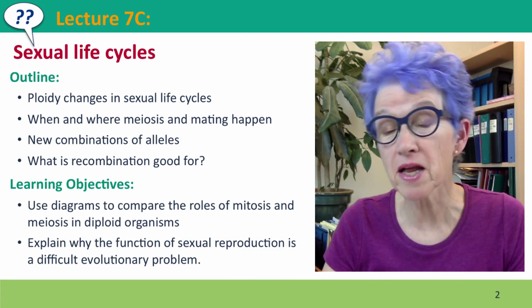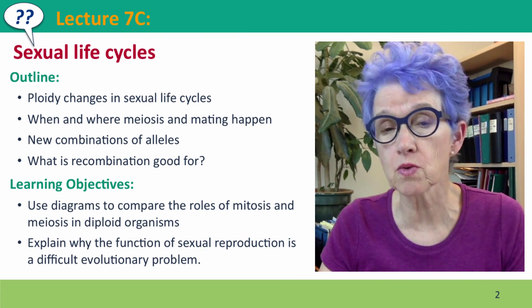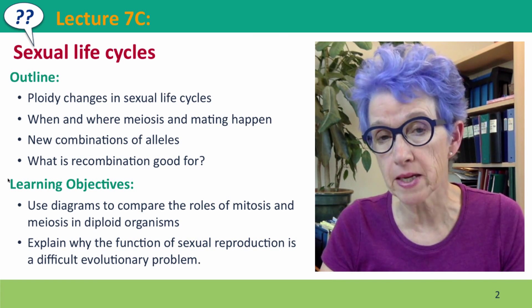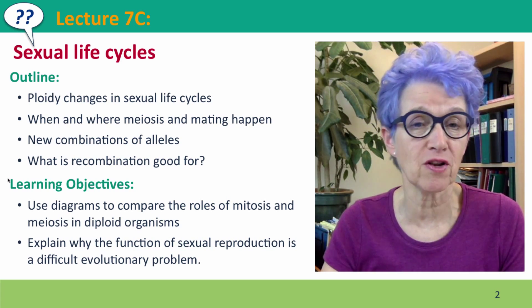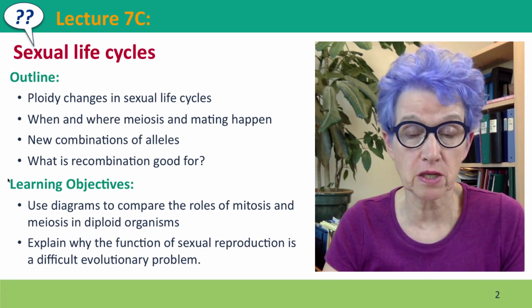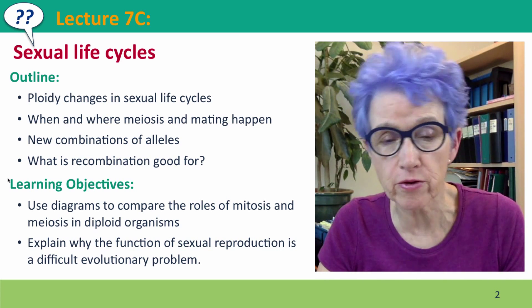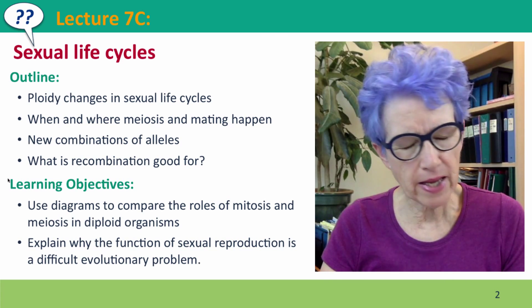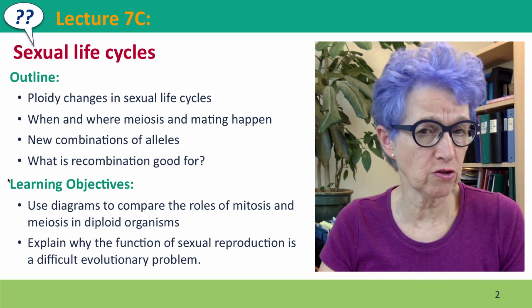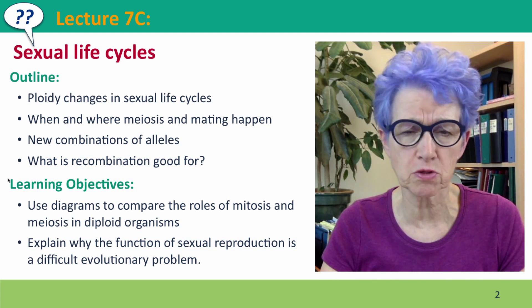Hi everyone, welcome back to Useful Genetics. This is lecture 7c where we're going to discuss sexual life cycles as a way of putting what we're going to learn about meiosis and mating into a functional organism-level context. We'll talk about how ploidy changes, about when and where meiosis and mating happen, and how meiosis and mating together make new combinations of alleles. And we'll end with the somewhat embarrassing admission that geneticists and evolutionary biologists really don't yet understand why recombination seems to be such a good thing.